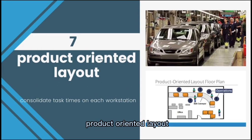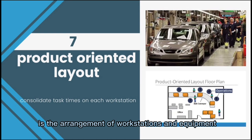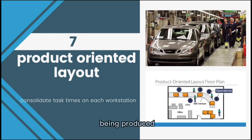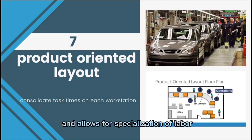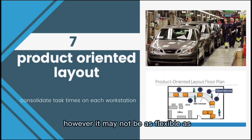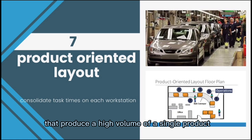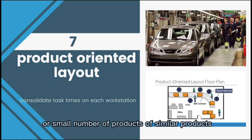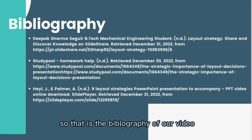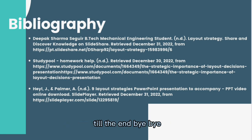Product oriented layout is the arrangement of workstations and equipment based on the products being produced. It is often used in mass production settings and allows for specialization of labor, which can increase efficiency and productivity. However, it may not be as flexible as other layouts when switching between different products or product lines. This layout is a good choice for organizations that produce a high volume of a single product or a small number of similar products. Thank you for watching till the end, bye.